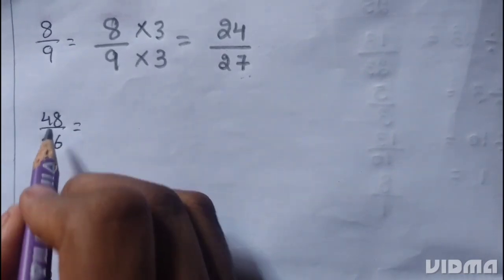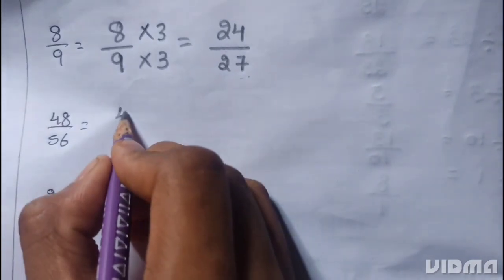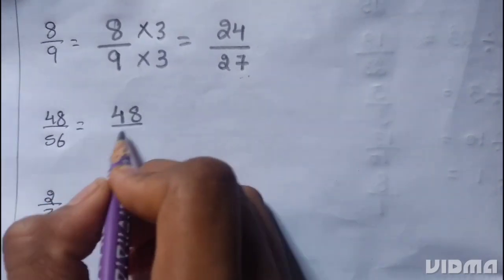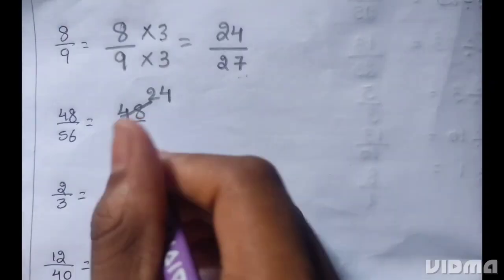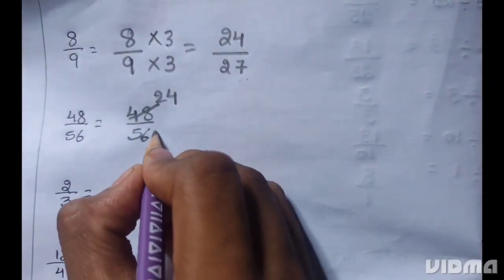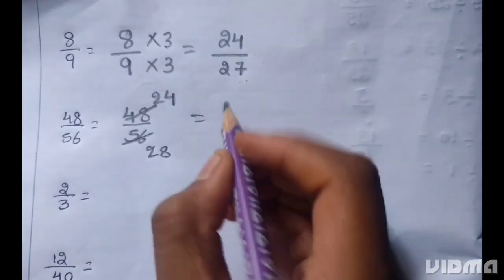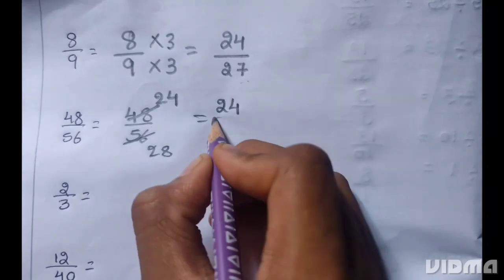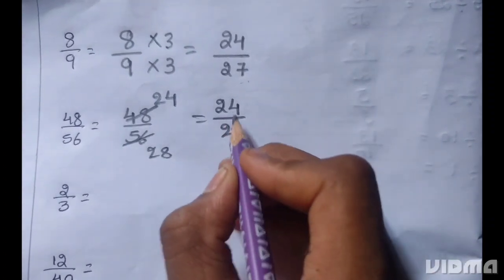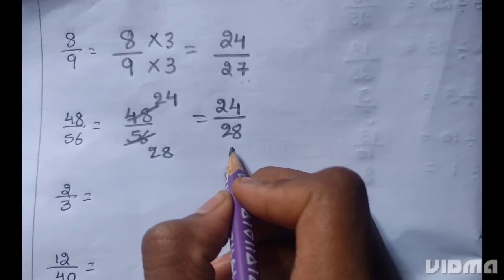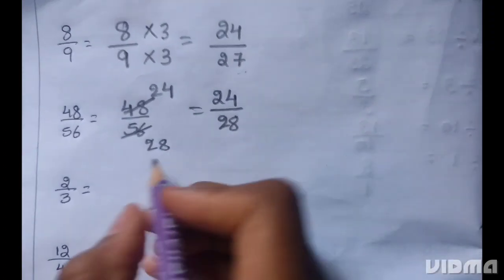Next, 48 by 56. Simplify to 24 by 28. 24 is the numerator, 28 is the denominator.